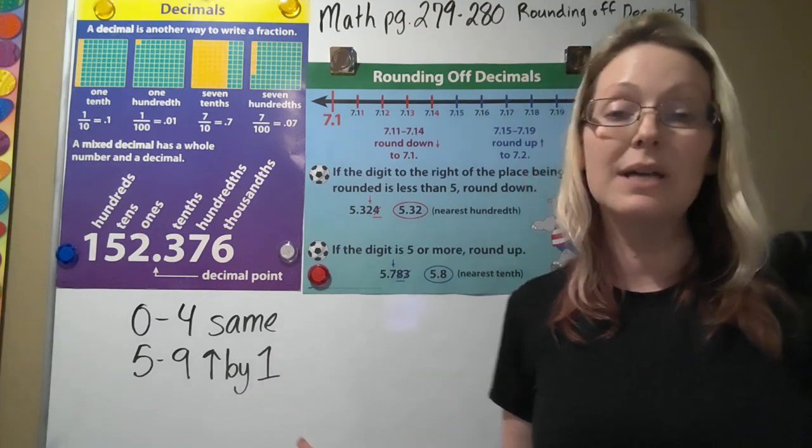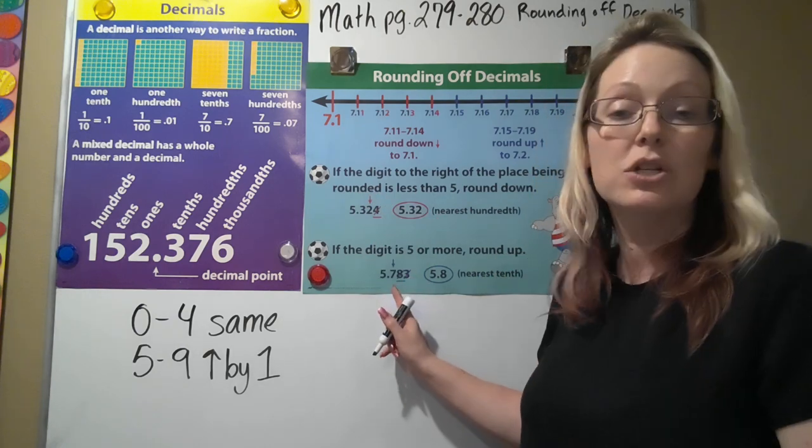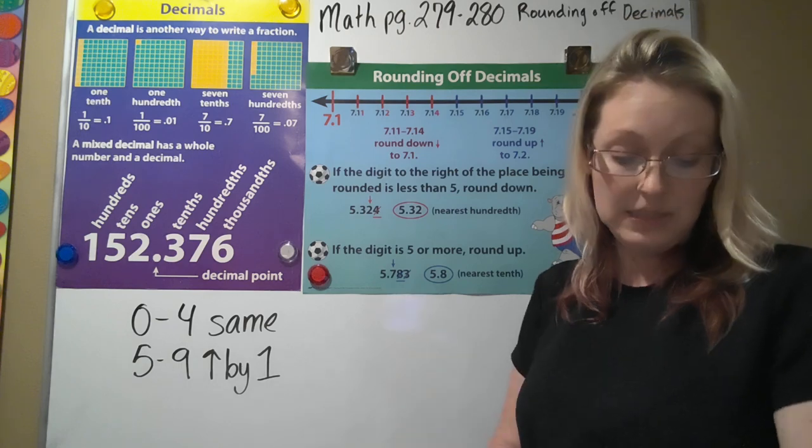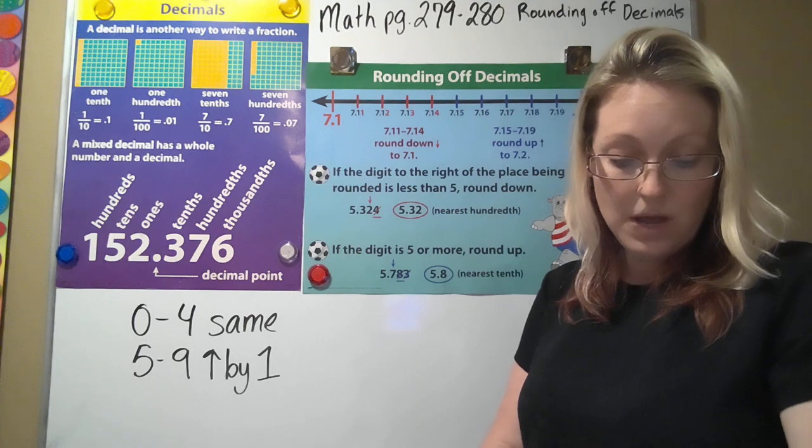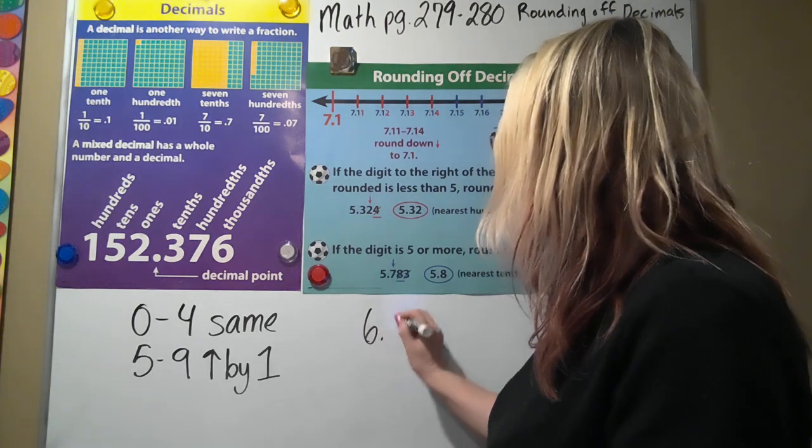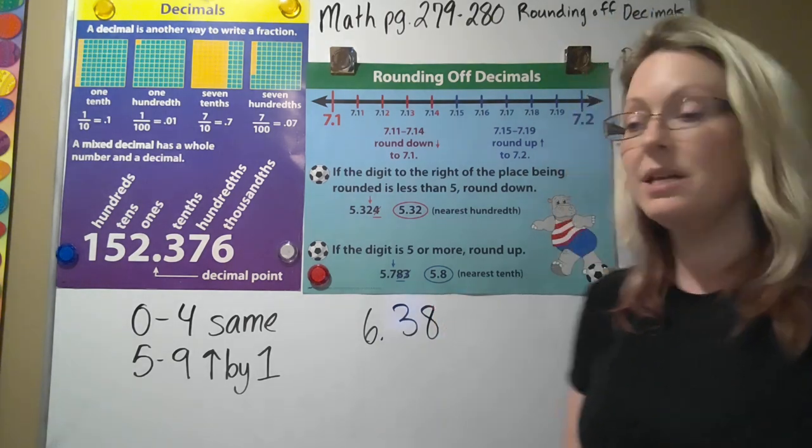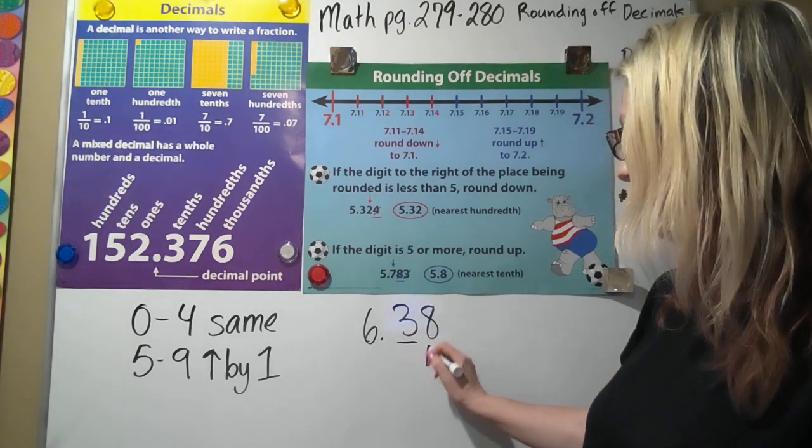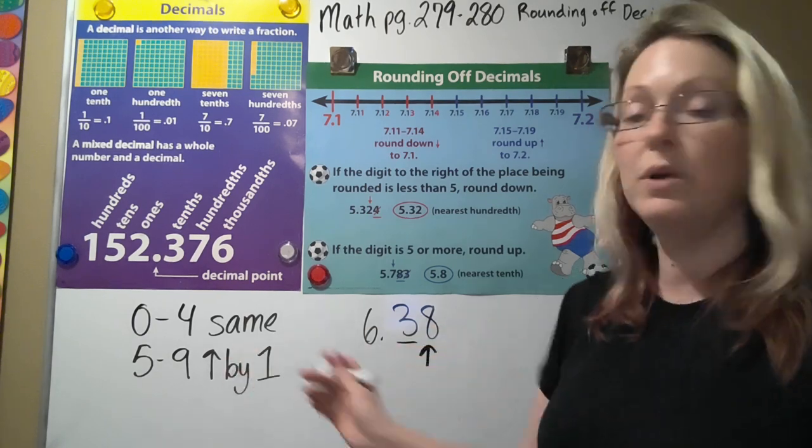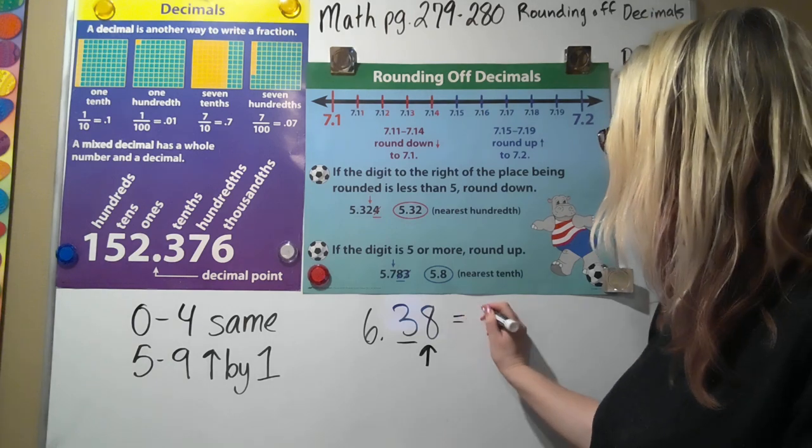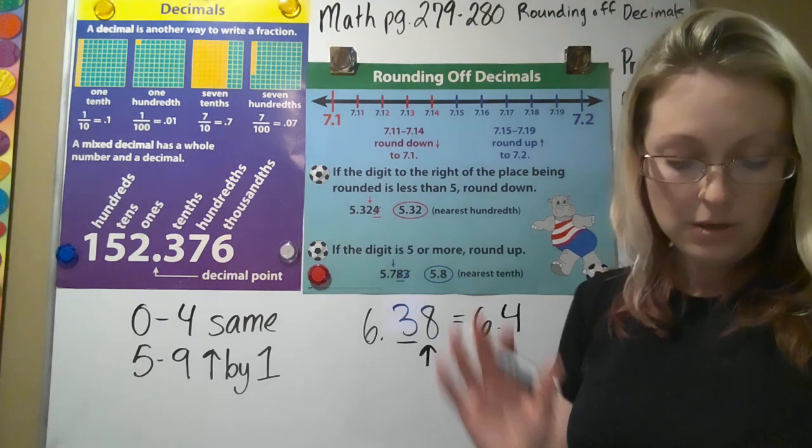Rounding is the same thing as what you guys have been doing. Just because it has a decimal doesn't make anything different. You just got to make sure you're finding which numbers you're rounding. So if I give you the number 6.38 and I said round to the nearest tenth, remember here's the tenths place, this is my determining digit. Then I would say that's between five and nine. This would be 6.4 because I'm rounding up that three.